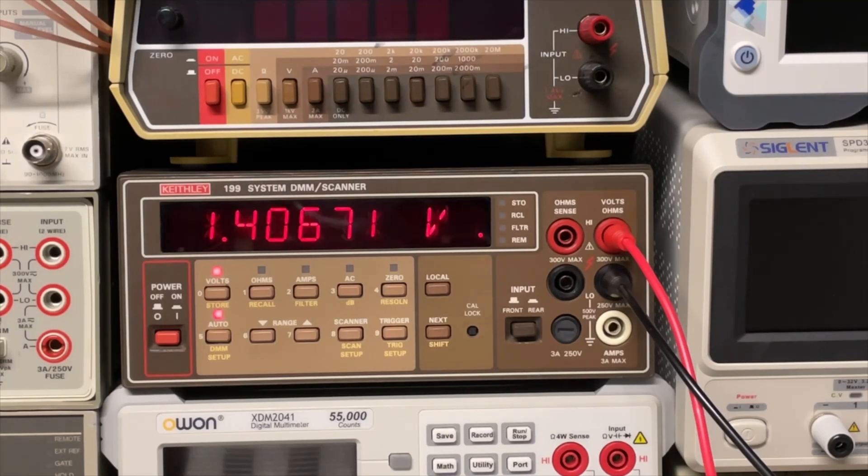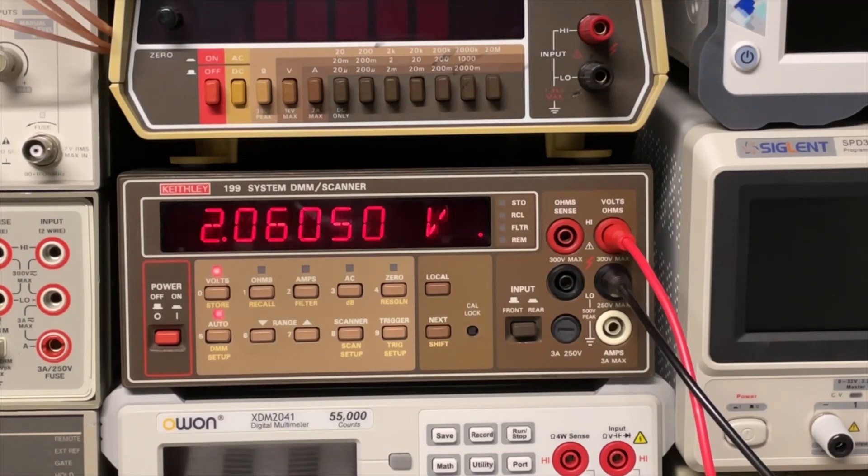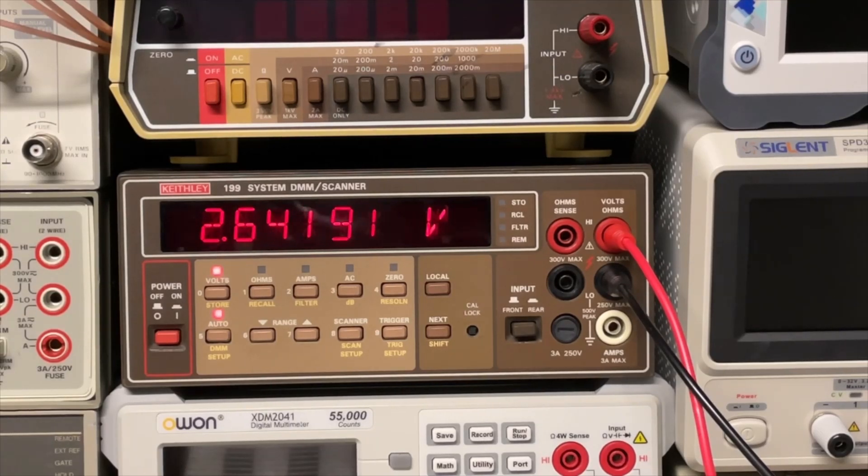So, we slowly increase the voltage. And then at some point, we should see where we lose one of the digits. At 2, it's still good, so it's at least 200,000 counts. We go up. Ah, there it went. Here. So, this meter is 300,000 counts. 3, 0, 0, 300, 1, 2, 3.